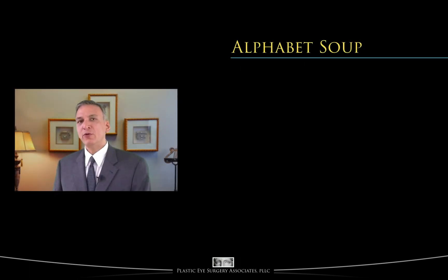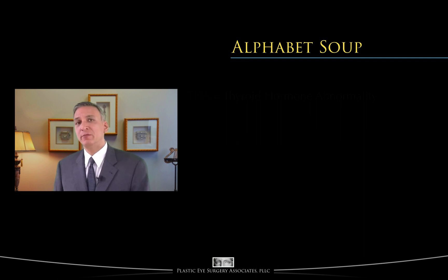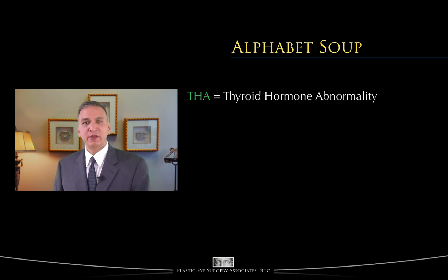There are a few three-letter acronyms that we need to understand. Although this may seem a little garbled and a little bit like alphabet soup, it's really quite simple and straightforward. The first acronym is THA, and this stands for Thyroid Hormone Abnormality.